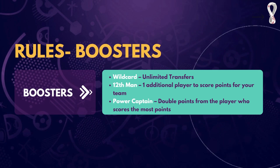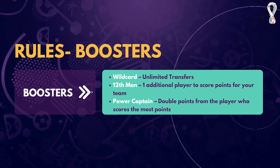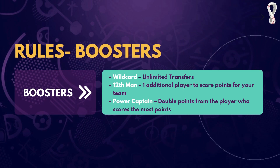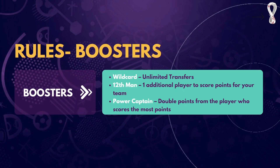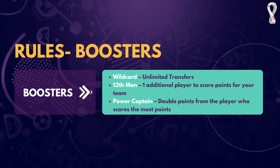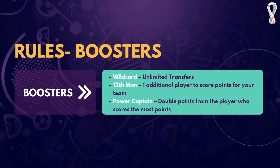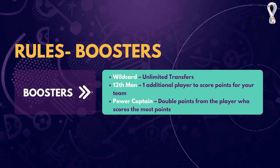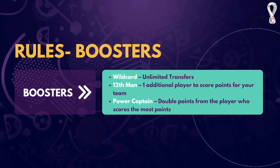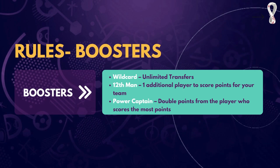The third booster is the power captain. This chip allows you to get double points from whichever player scores the most points from your 15-man team. Once activated, the player with the maximum points in your team is automatically assigned the captaincy and those points get doubled. For example, if a player scores 15 points and that's the maximum in your team, the total from that player would be 30. Importantly, a booster can only be used once and multiple boosters cannot be used at the same time in the same match day. I'll be making a separate video on the optimum chip strategy.